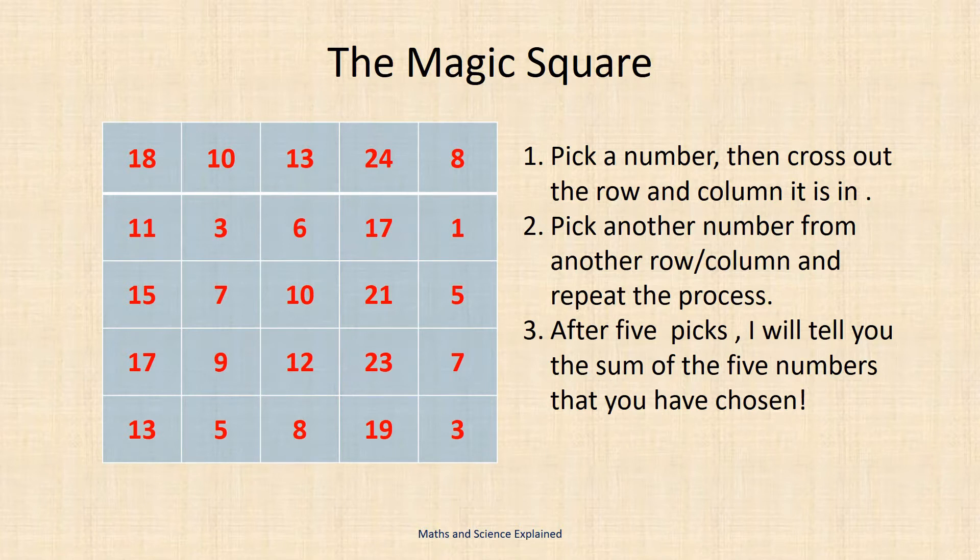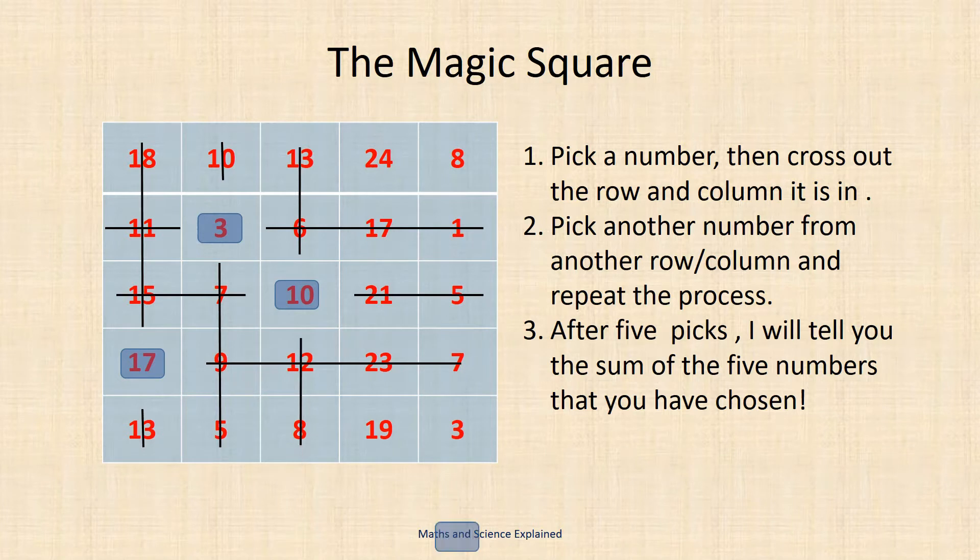Let's run through an example of this. Without me looking you first pick the number three and put a coin on it and cross out the row and column in which it's in. You then repeat the process by choosing the numbers 17, 8 and 10. The last number remaining is 19 and you are forced to choose it.